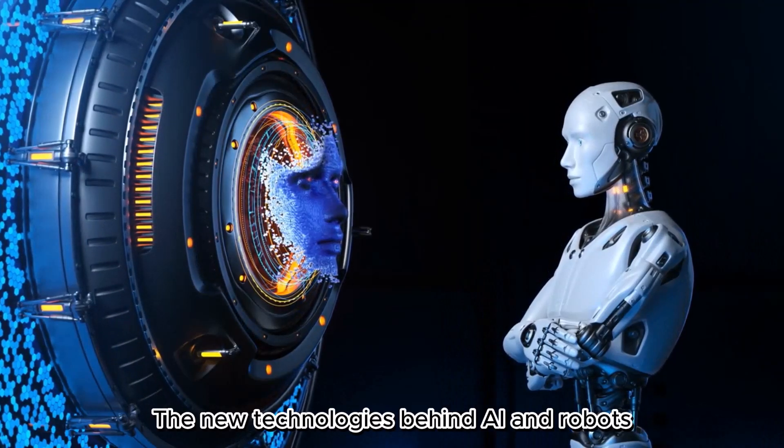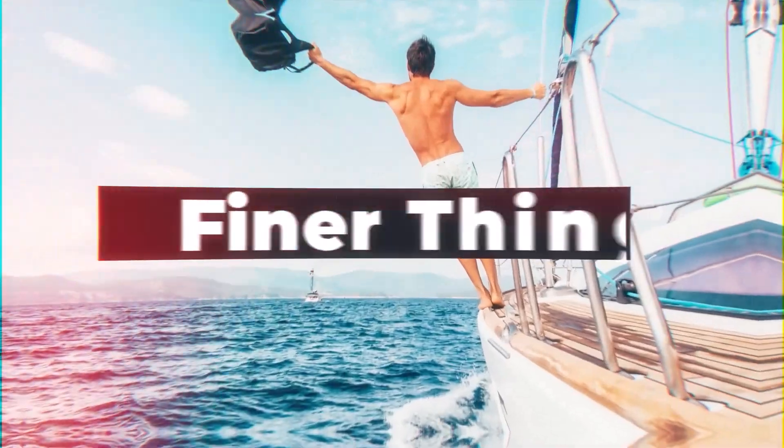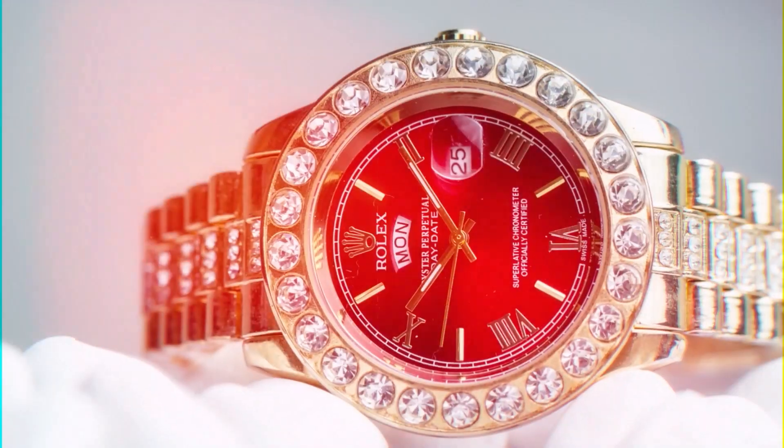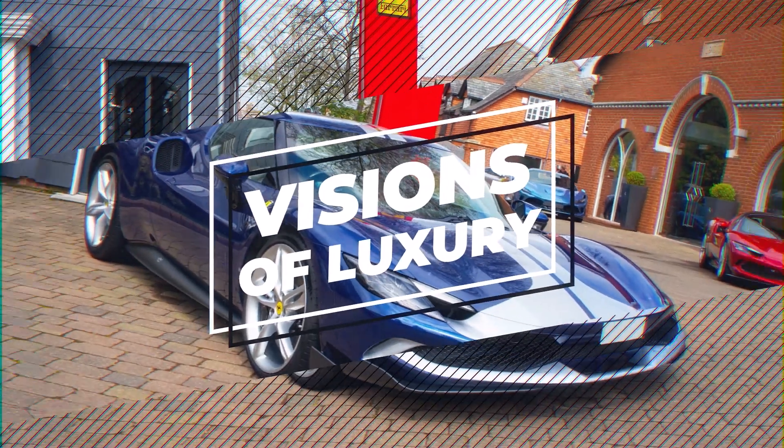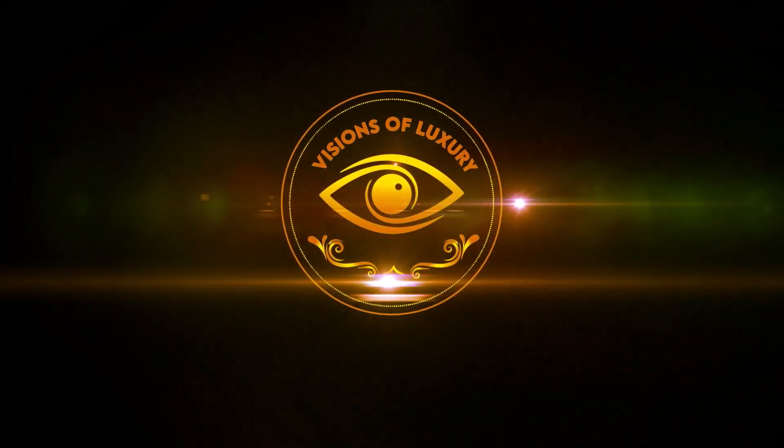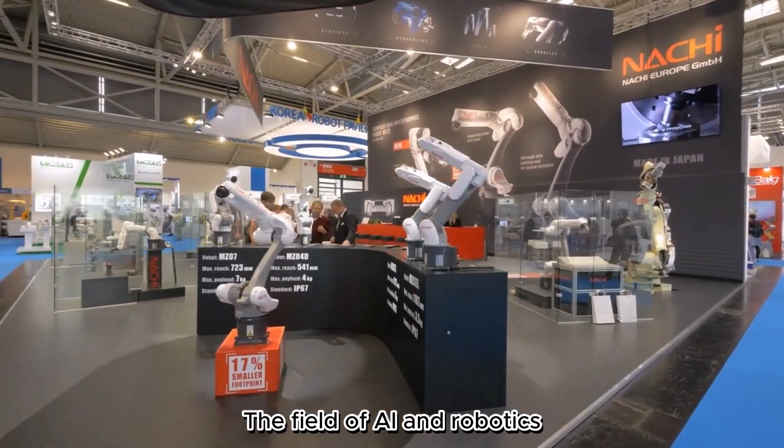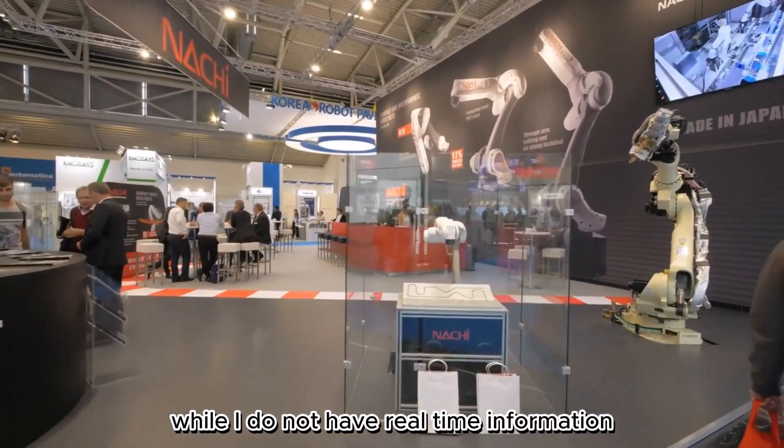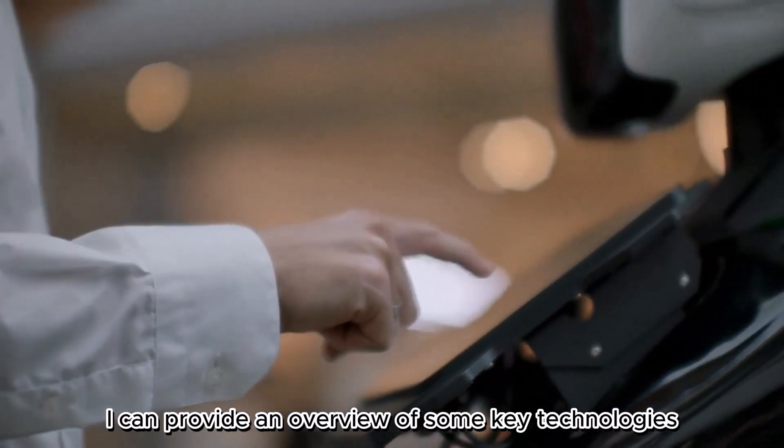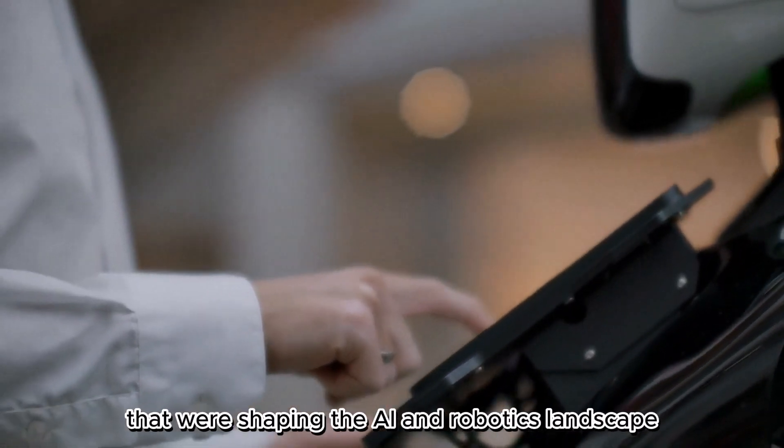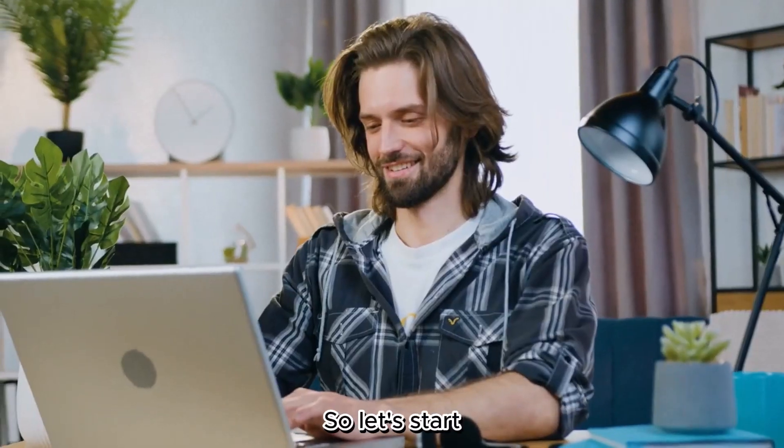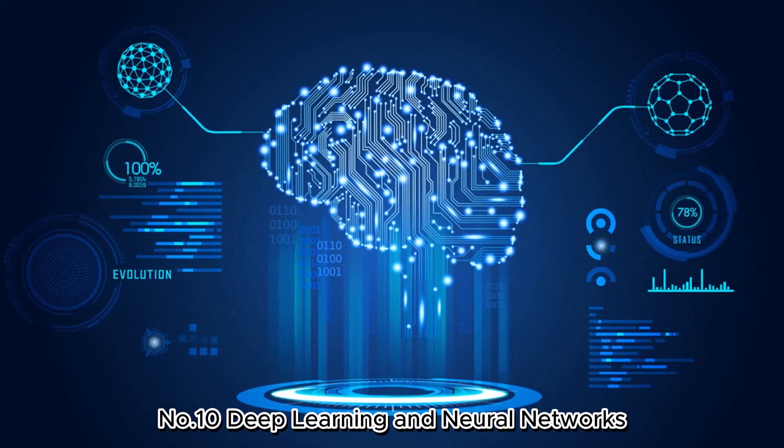The New Technologies Behind AI and Robots. The field of AI and robotics has seen significant advancements due to ongoing research and development. While I did not have real-time information beyond that date, I can provide an overview of some key technologies that were shaping the AI and robotics landscape up to that point. Before starting, don't forget to like and subscribe to our channel for more future updates. So, let's start. Number 10: Deep Learning and Neural Networks.